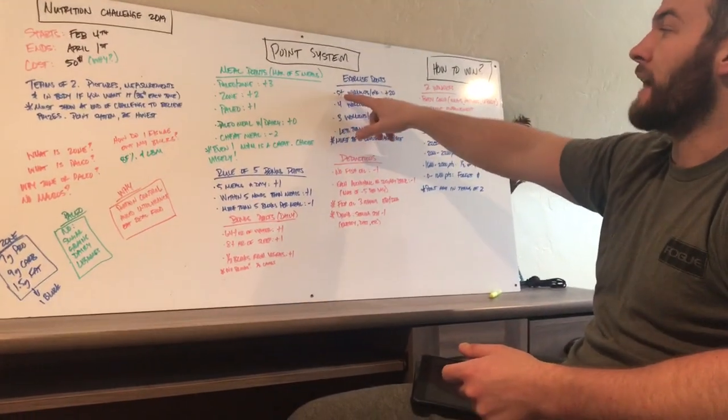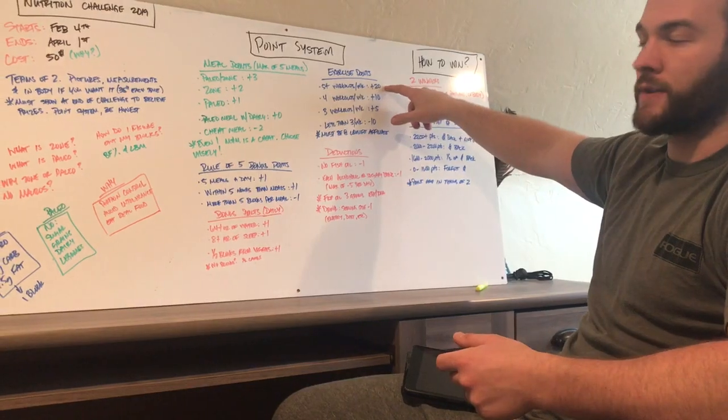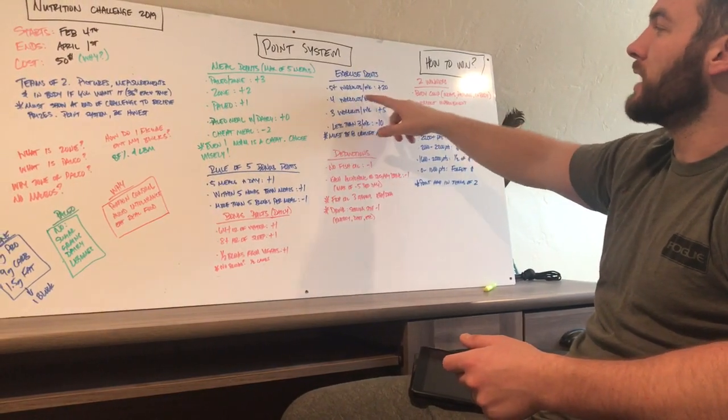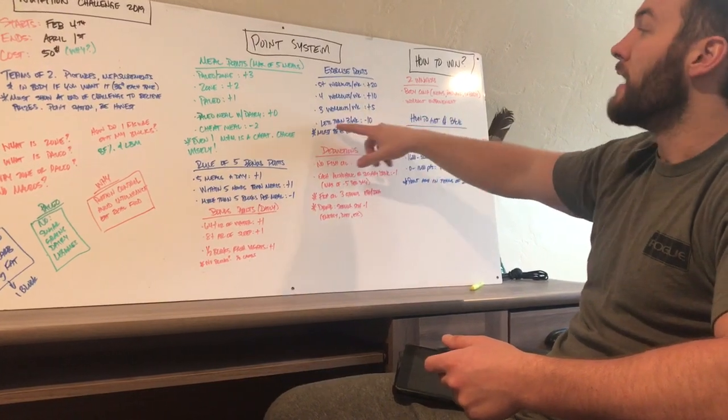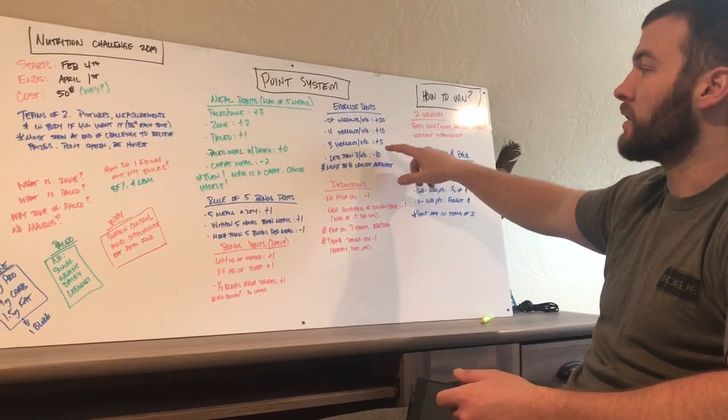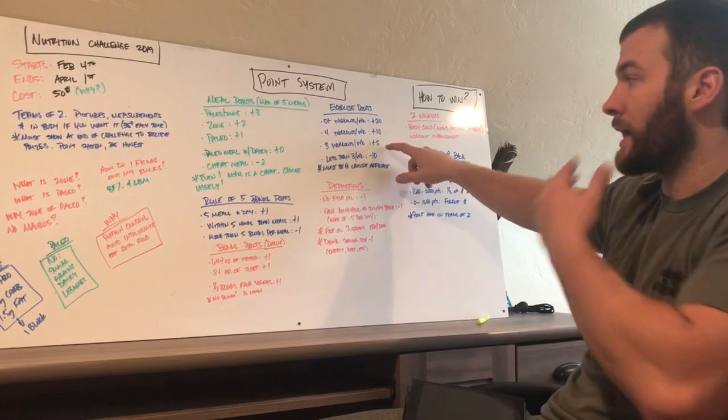Exercise points. If you do five or more workouts a week, you get 20 points for the week. If you do four workouts a week, you get 10 points for the week. If you do three workouts a week, five points for the week. If you do less than three workouts a week, minus 10. So the goal is we want you to come, we want you to work out.